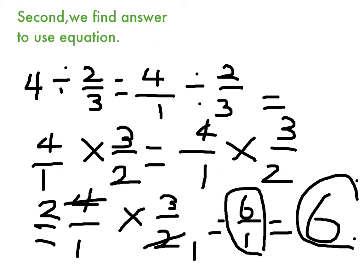So, the answer is six. Six of friends get a cake. So, the answer for the equation is same. It's six friends.